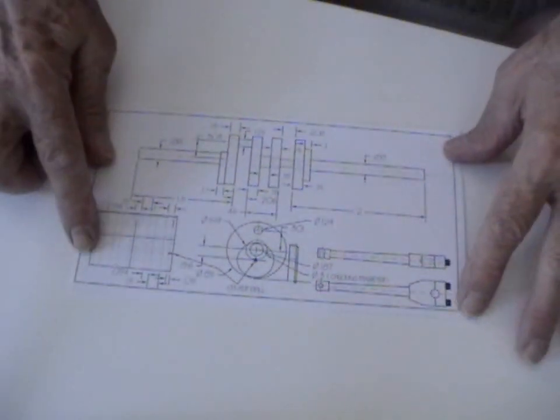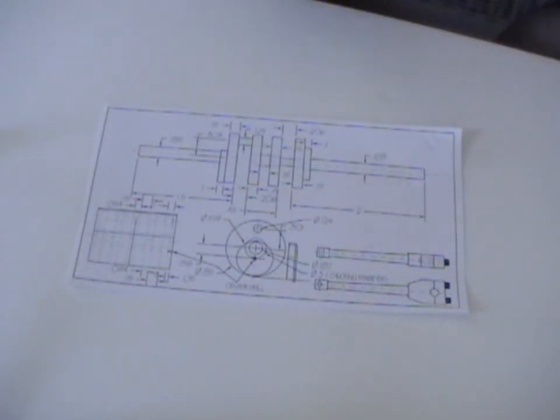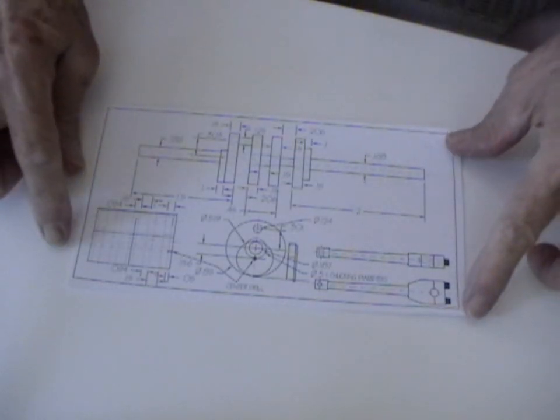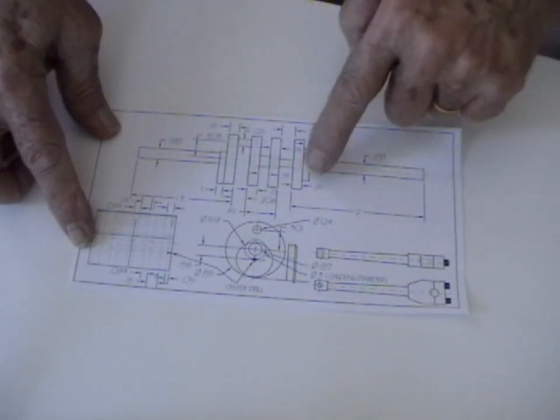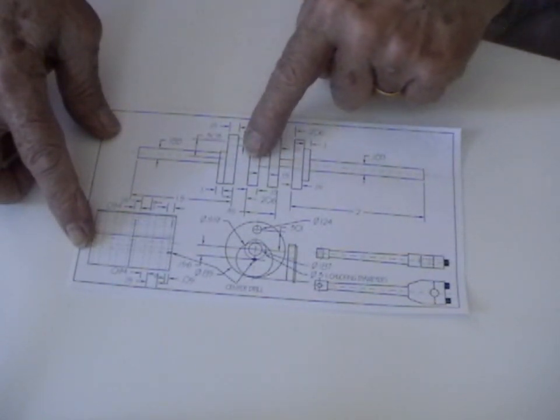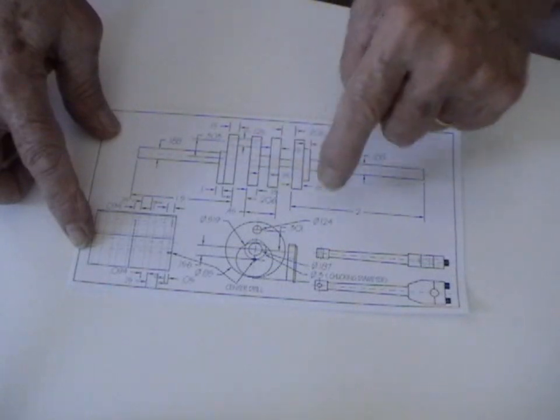The first thing I have to make is the crankshaft because that's the most difficult of all. If I can't make the crankshaft, I can't make the whole engine. This is the crankshaft itself with two inner circular crank discs and two outer ones.